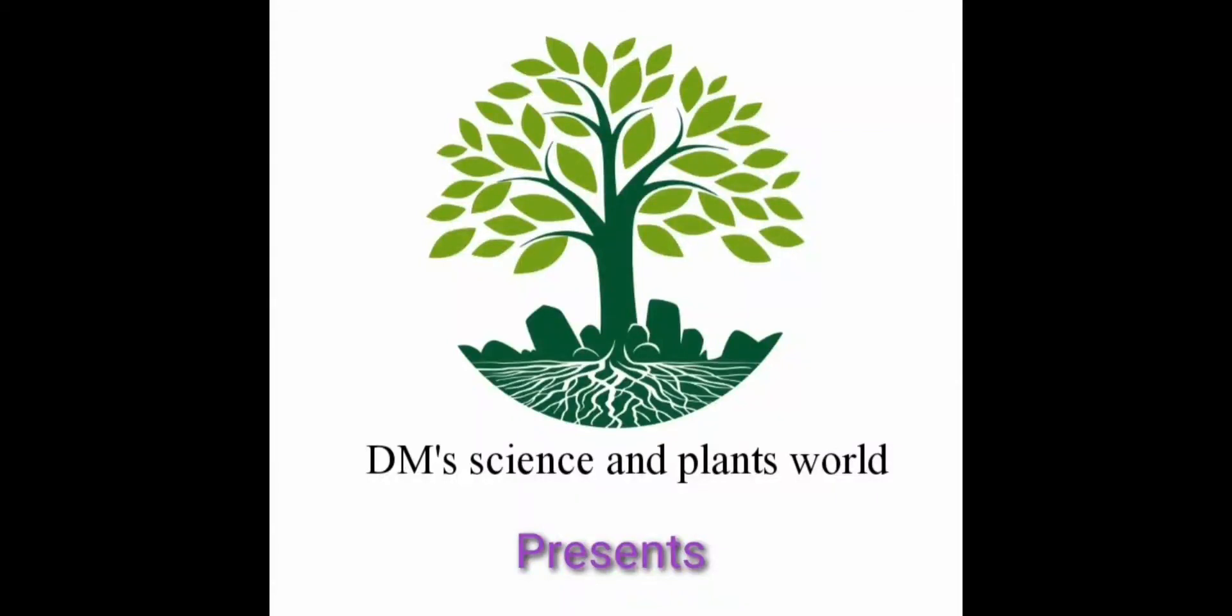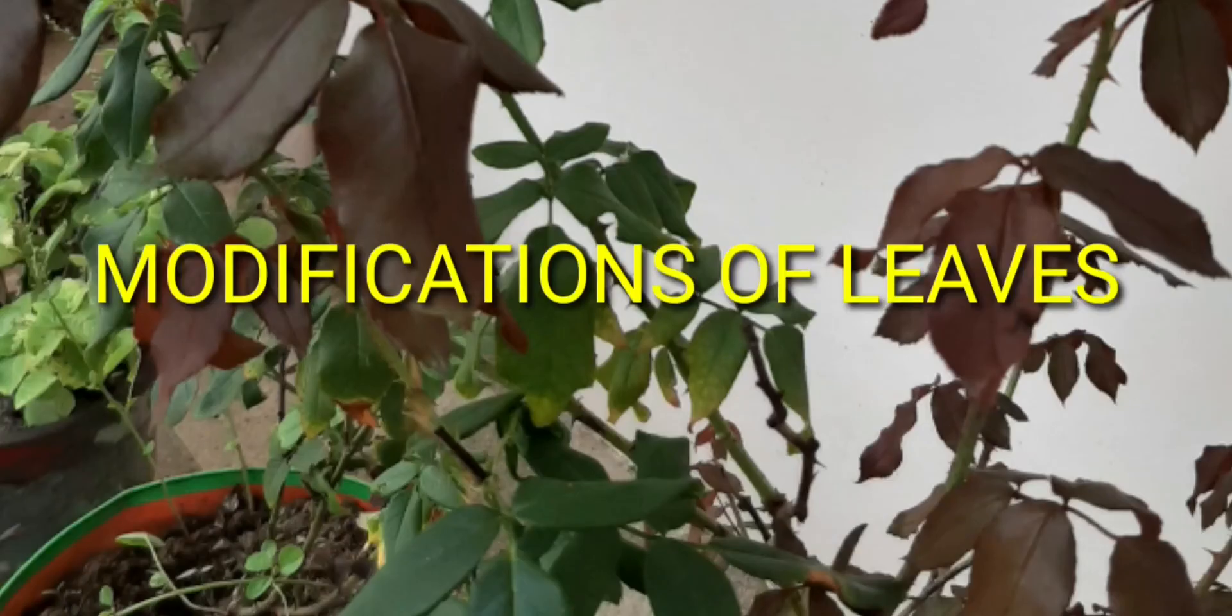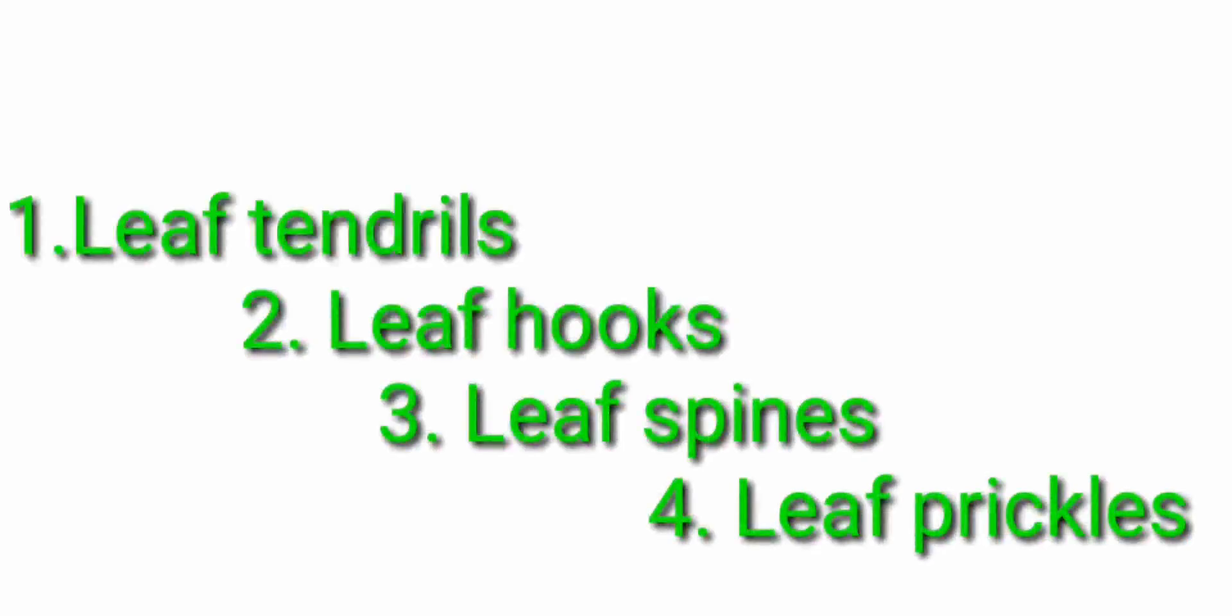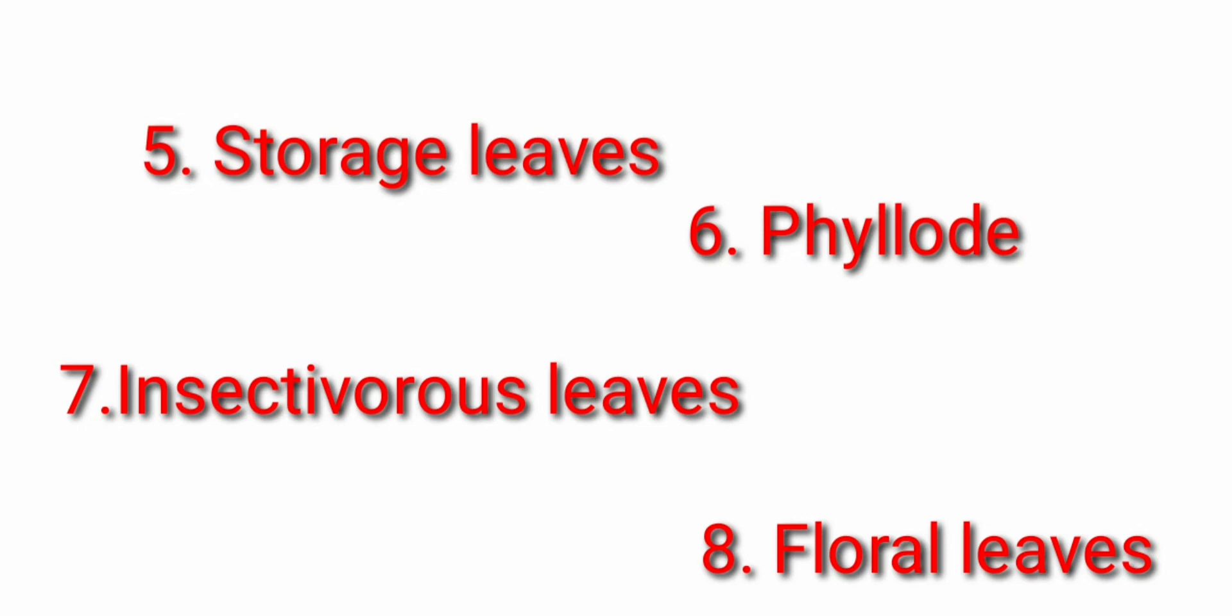DM Science and Plants World presents about the modification of leaves. Leaves are modified into many forms like leaf tendrils, leaf hooks, leaf spines, leaf prickles, storage leaves, phyllode, insectivorous leaves, and floral leaves.